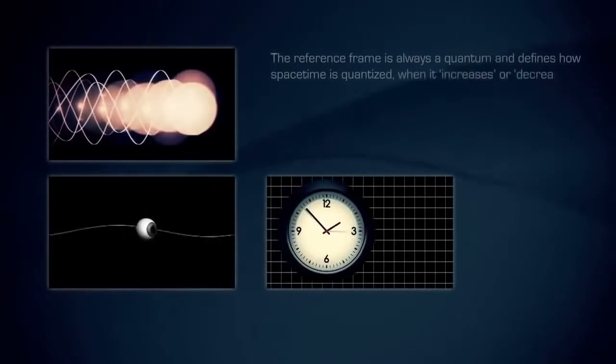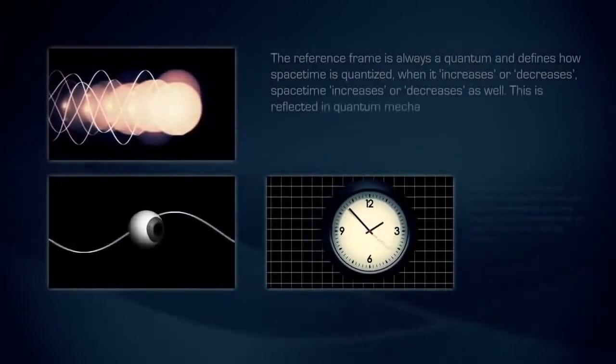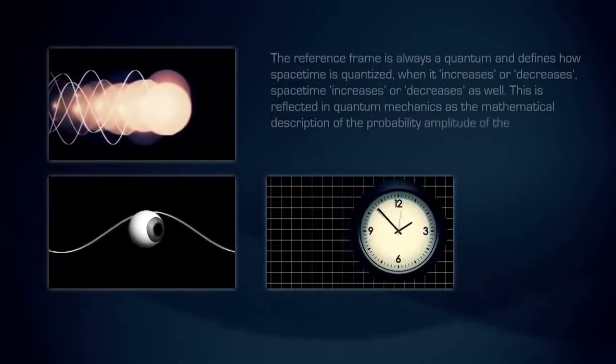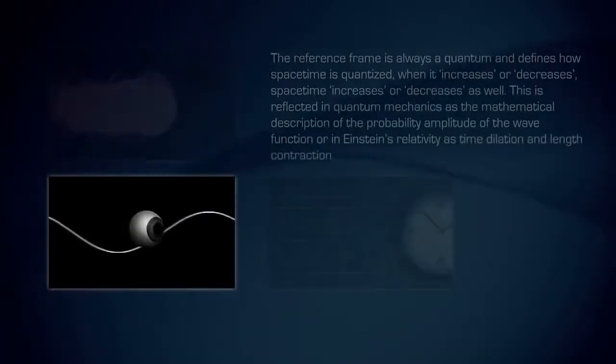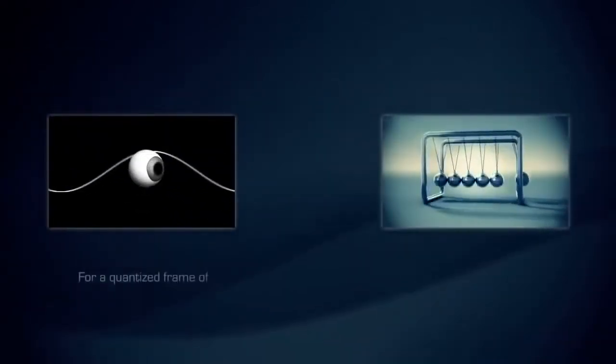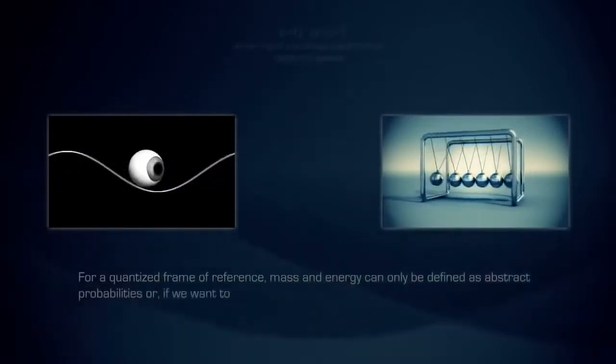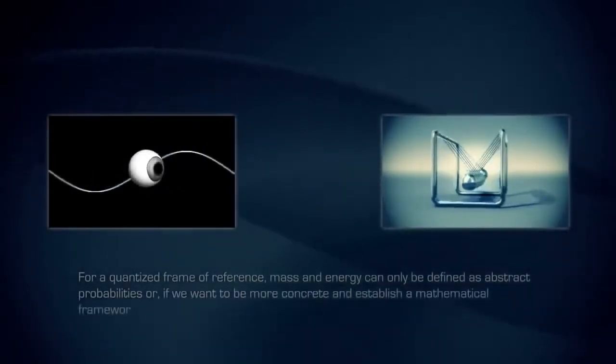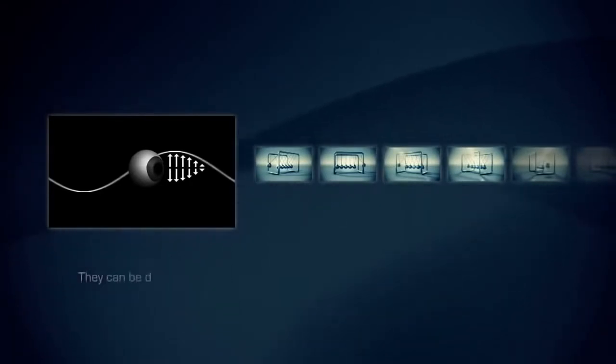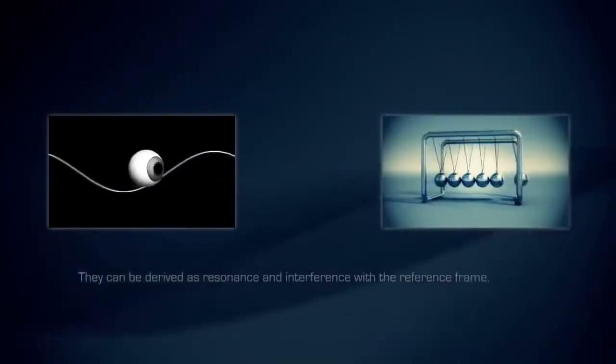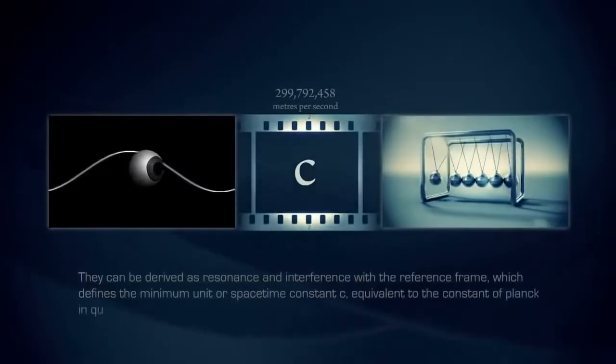The reference frame is always a quantum and defines how spacetime is quantized. When it increases or decreases, spacetime increases or decreases as well. This is reflected in quantum mechanics as the mathematical description of the probability amplitude of the wave function, or in Einstein's relativity as time dilation and length contraction. For a quantized frame of reference, mass and energy can only be defined as abstract probabilities, or as vectors which can only exist when we assume an arrow of time. They can be derived as resonance and interference with the reference frame, which defines the minimum unit or spacetime constant C, equivalent to the constant of Planck in quantum mechanics.